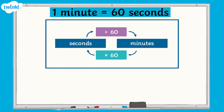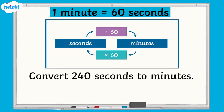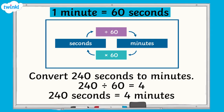To convert from seconds to minutes, we would divide the number of seconds by 60, to give us the total in minutes. For example, to convert 240 seconds to minutes, we would divide 240 by 60, which equals 4. So 240 seconds equals 4 minutes.